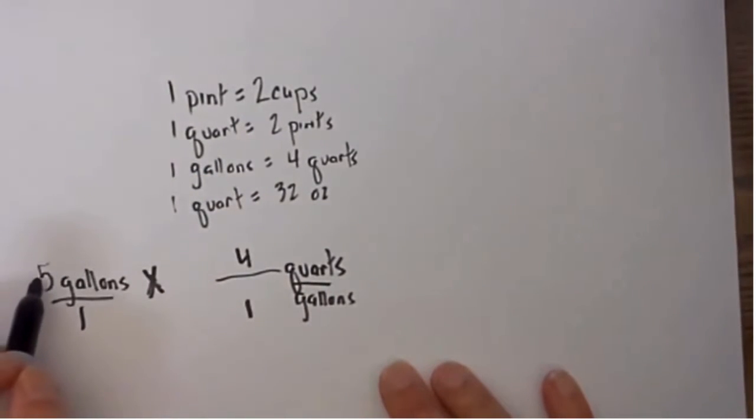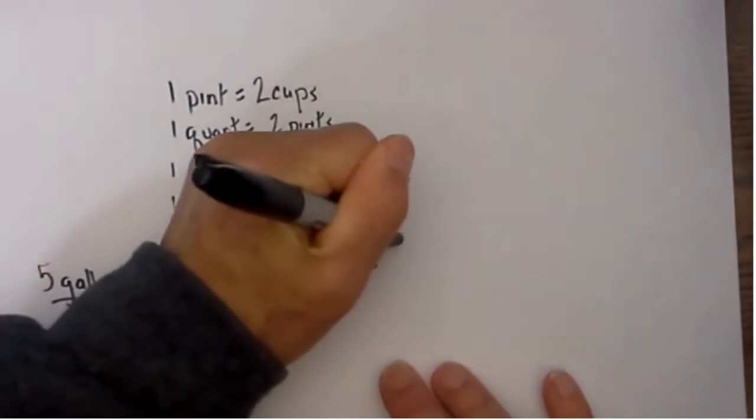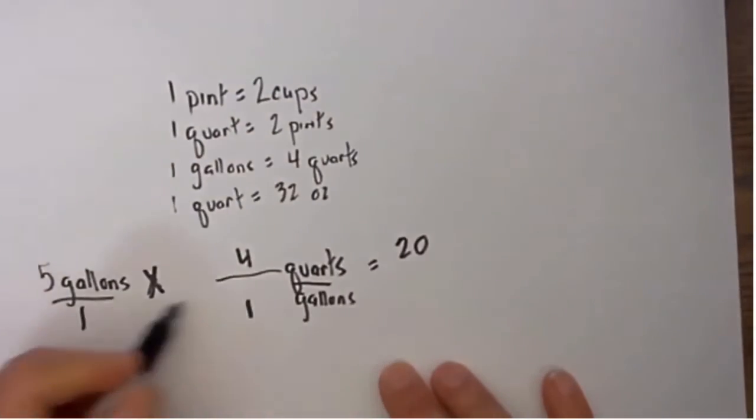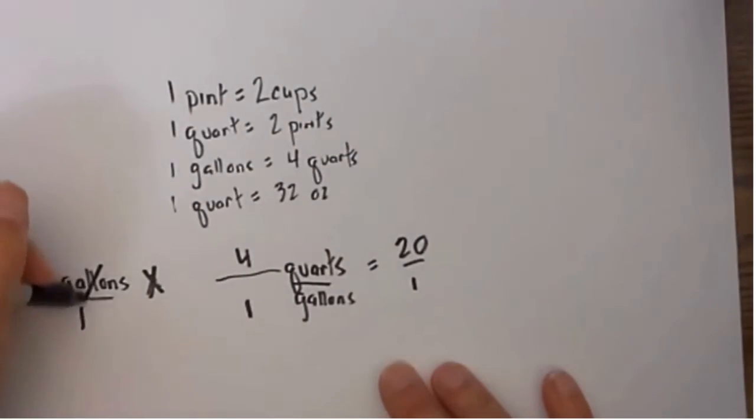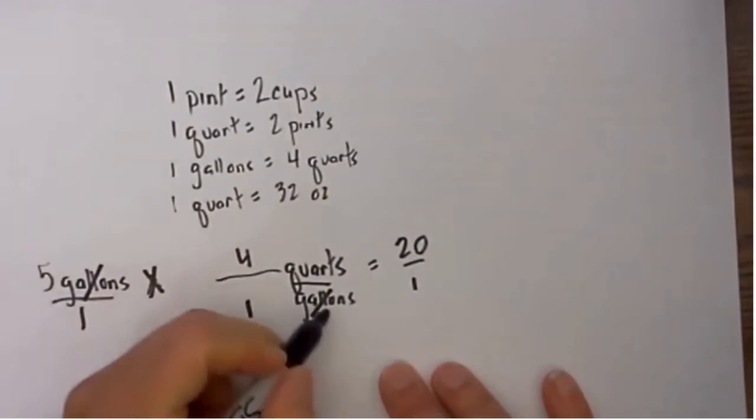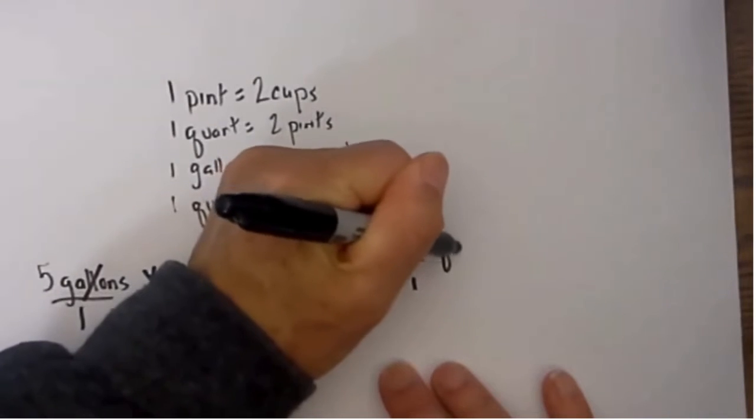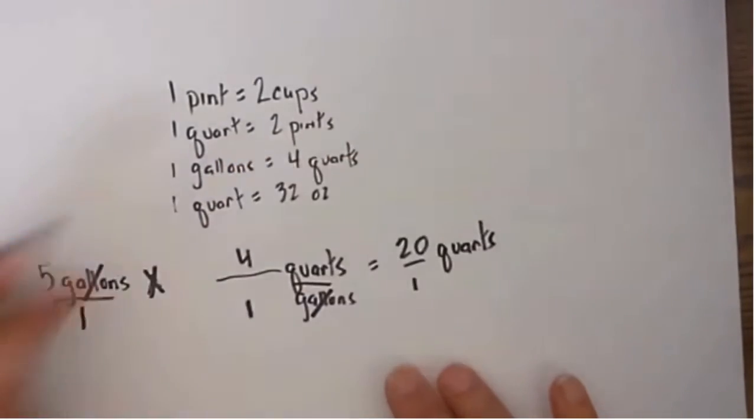I then have it set up. I multiply 5 times 4 which is equal to 20. 1 times 1 is 1. My units of measure cancel, gallons cancel, and I am left with 20 quarts.